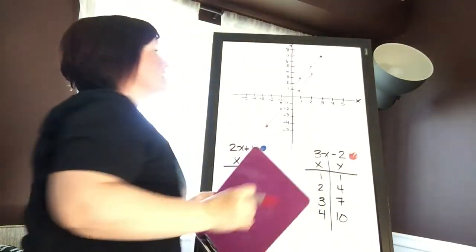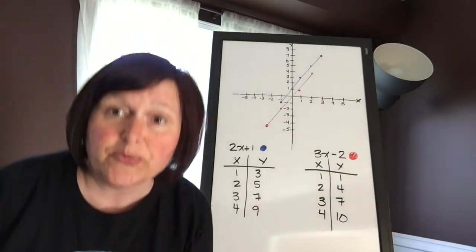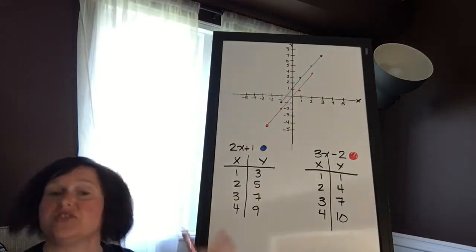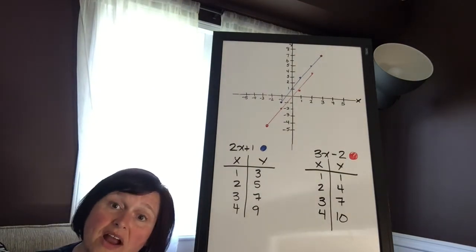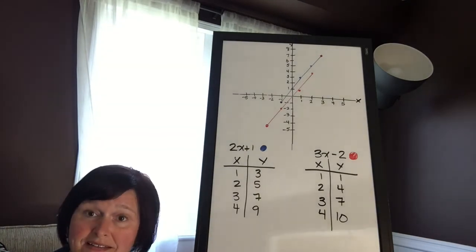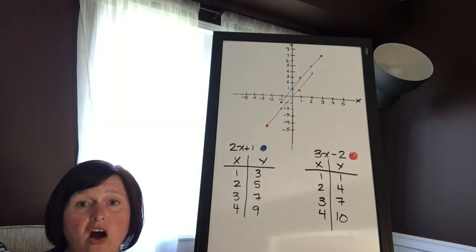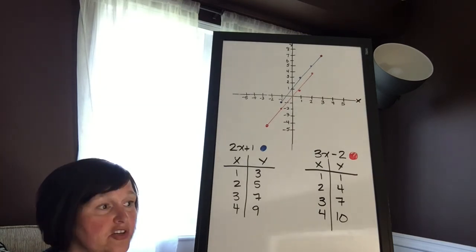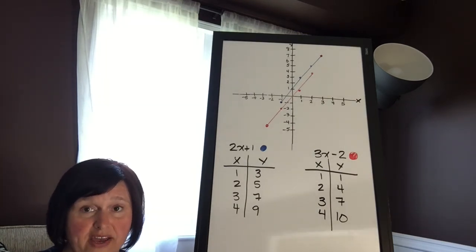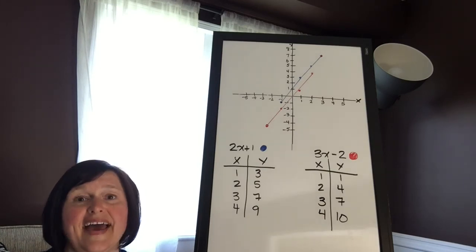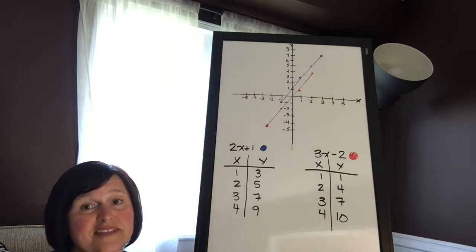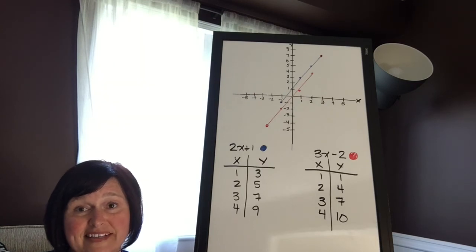What you can do is you can kind of start to compare them: which one has a higher angle, which one has a lower angle, which one is more steep, which one is more flat, and you can begin to compare them. But today, all I want you to do is learn how to visualize your algebraic explicit patterns and to graph them. So that's your job for today. Good luck, and if you have any problems, remember I'm always here waiting to hear from you. Bye.